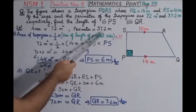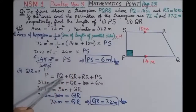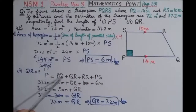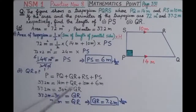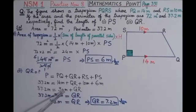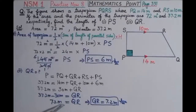In Part 2, we found the length QR using the perimeter formula. The perimeter is 37.2 meters. Writing P equals PQ plus QR plus RS plus PS, and putting in all known values except QR, we get 37.2 equals 14 plus QR plus 10 plus 6. Adding gives 30 meters, and subtracting: 37.2 minus 30 equals 7.2 meters. So QR equals 7.2 meters.